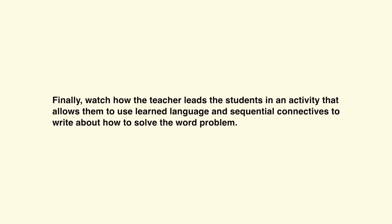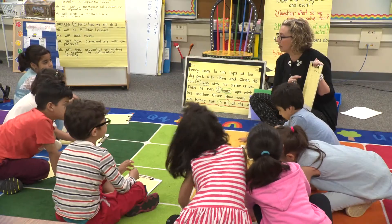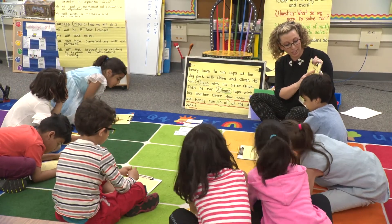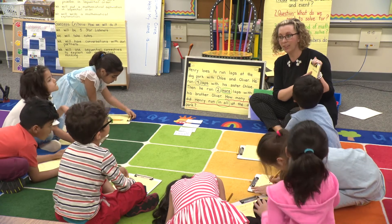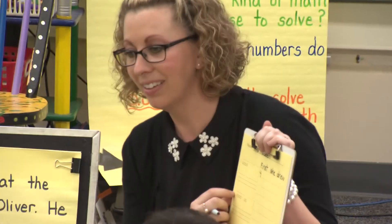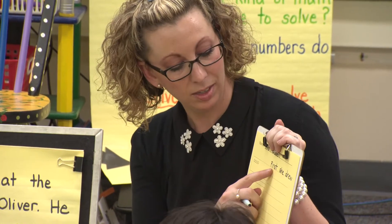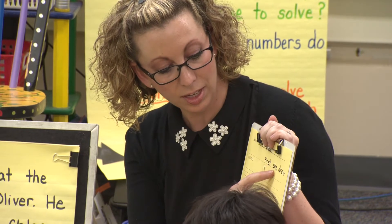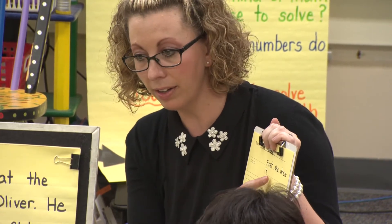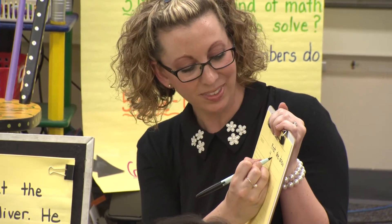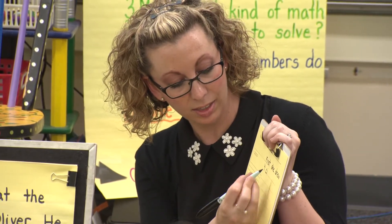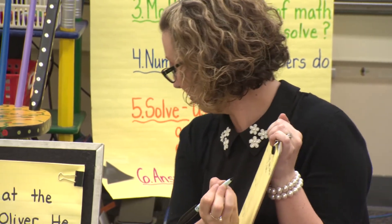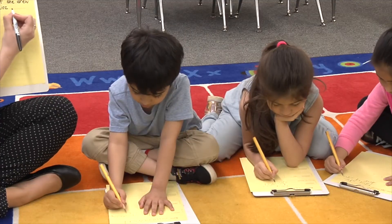Finally, watch how the teacher leads the students in an activity that allows them to use learned language and sequential connectives to write about how to solve the word problem. Teacher: Re-read to see our next word. First, she drew... Students: Four. Teacher: Yes, four. Write four. Re-read. Four circles. Students spell out: C-I-R-C-L-E-S. Circles.